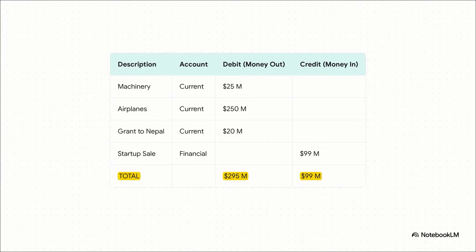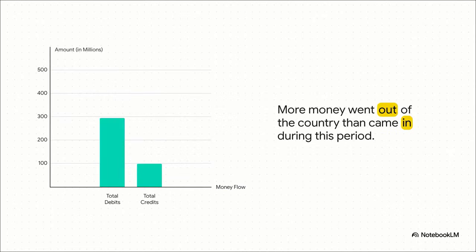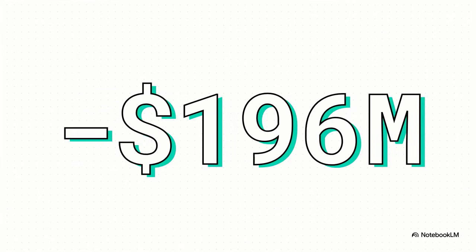On the debit side — all the money that went out — we have a total of $295 million. And on the credit side — all the money that came in — we have $99 million. When you see it as a bar chart, the difference is really stark. That blue bar for debits is towering over the green bar for credits. So the final balance: we take the $99 million that came in, subtract the $295 million that went out, and that leaves us with negative $196 million.